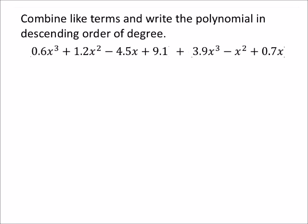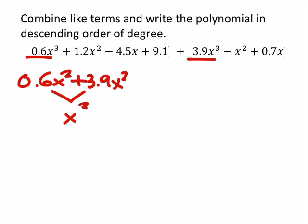So the first term, again I work from left to right. Maybe some of you guys like to start in the middle and cherry pick them. That doesn't matter. If we need to rearrange these later on, that's fine with me. So I've got x cubed, and the only other x cubed I have looks like is right there. It's 3.9 x cubed. So I've got 0.6 x cubed plus 3.9 x cubed. When I combine these, I'll still have x cubed. But I've got 0.6 plus 3.9, which is 4.5.